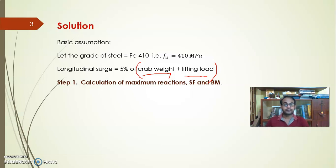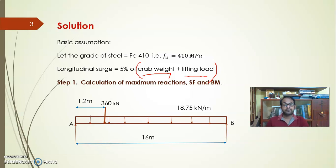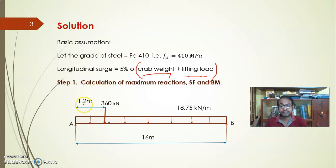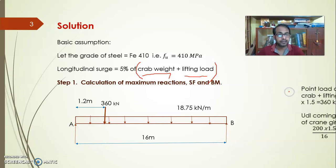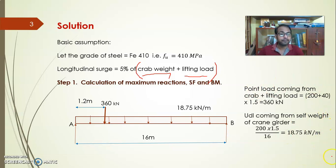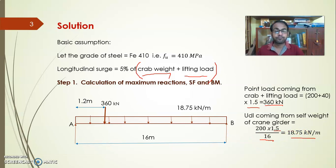Step one is the calculation of maximum reaction, shear force, and bending moment. The crab weight and lifting load must be placed at the maximum approach distance — minimum distance from the column — to create the maximum reaction from the crane girder transferred to the gantry girder. The point load is crab weight plus lifting load = 240 kN, multiplied by the load factor 1.5 (limit state of collapse), giving 360 kN. The UDL due to self-weight, factored and divided by span, comes to 18.75 kN/m.